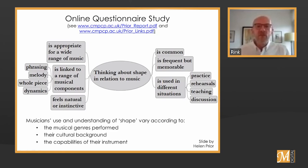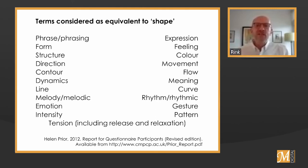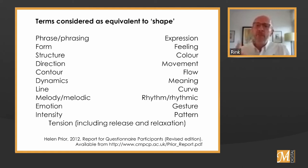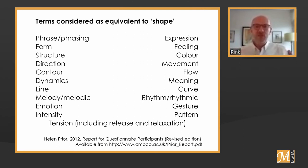The terms that questionnaire respondents considered equivalent to shape cover just about everything you can think of — anything that can move or have a process in music — including phrase and phrasing, expression, form, feeling, structure, color, direction, movement, contour, flow, dynamics, meaning, line, curve, melody, rhythm, emotion, gesture, intensity pattern, and tension, including patterns of release and relaxation. These are very key points of equivalence between this term 'shape,' which obviously has vast potential meaning, and the reality of music as understood by those making or hearing it.